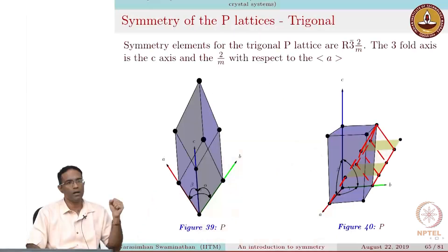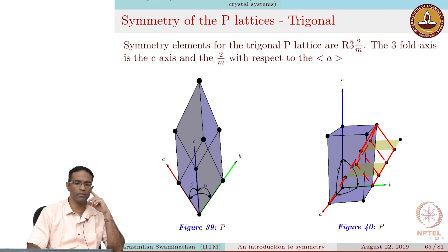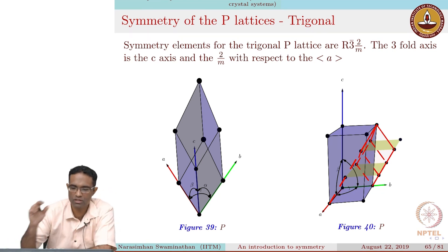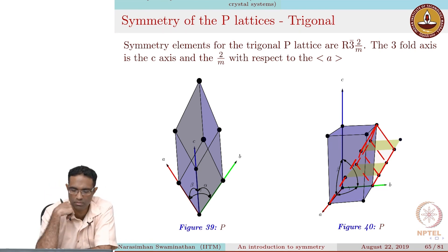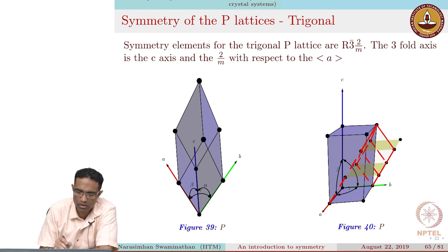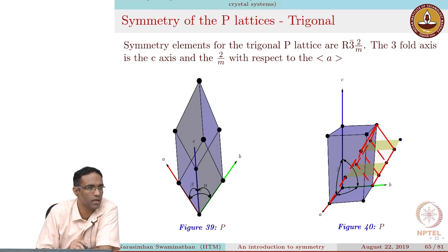Good afternoon, let us continue with whatever we were discussing last class. We were talking about the symmetry of the Bravais lattices in 3D. In particular, we looked at the trigonal lattice, or rhombohedral lattice as it may also be called, and we talked about one specific unit cell that might be appropriate for this particular lattice.